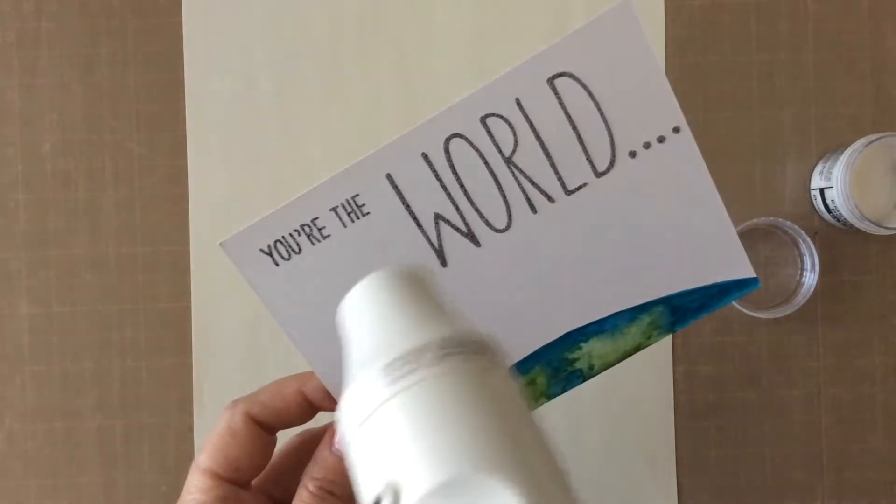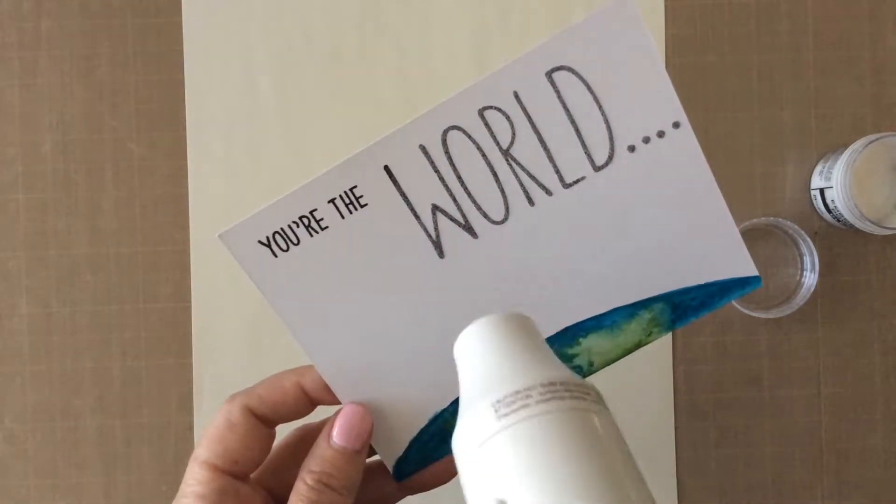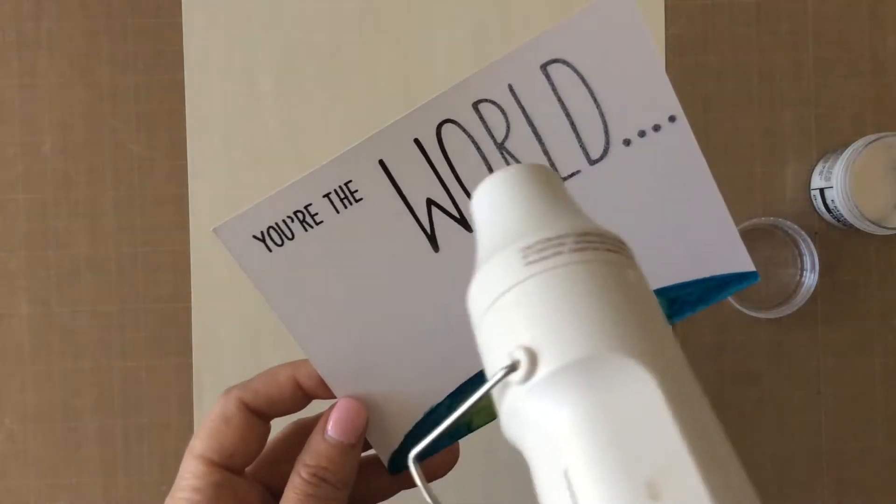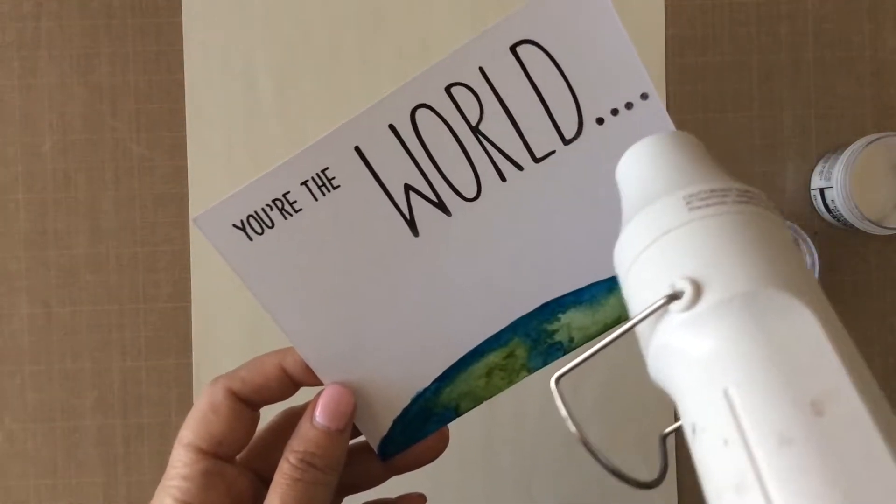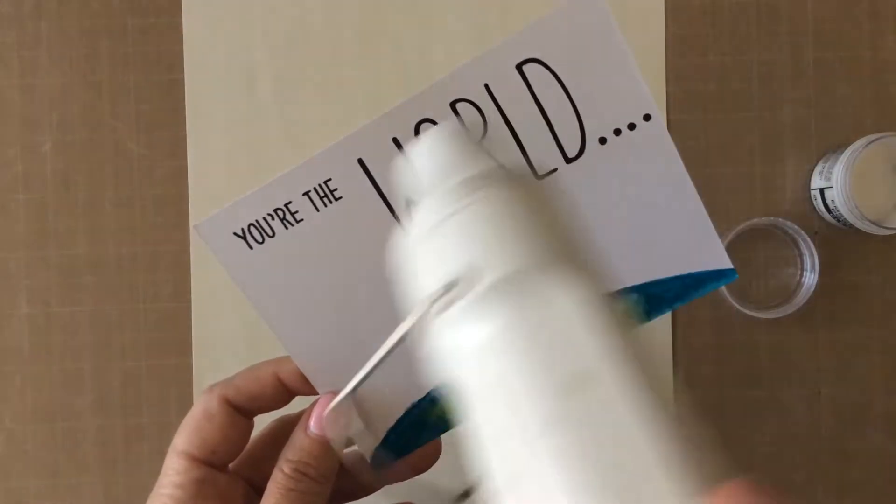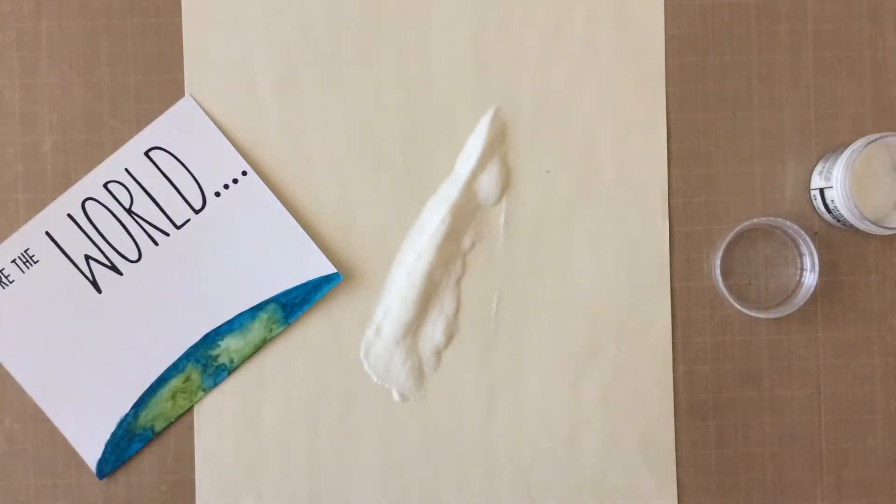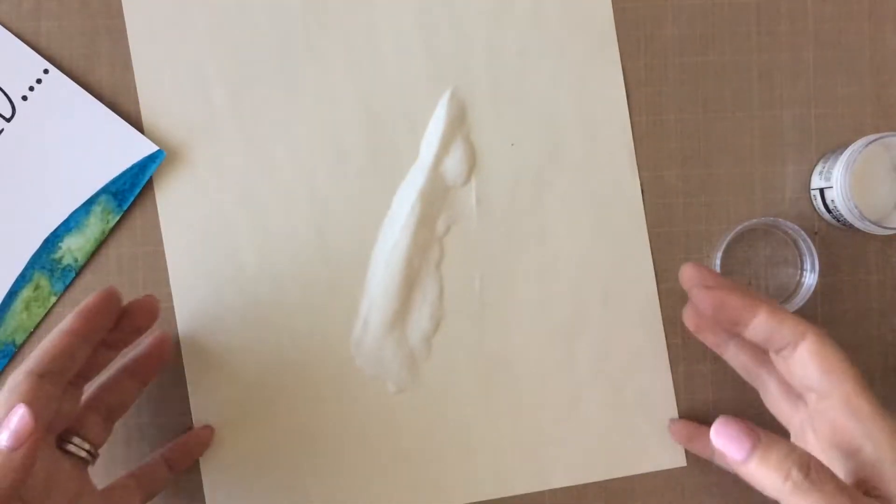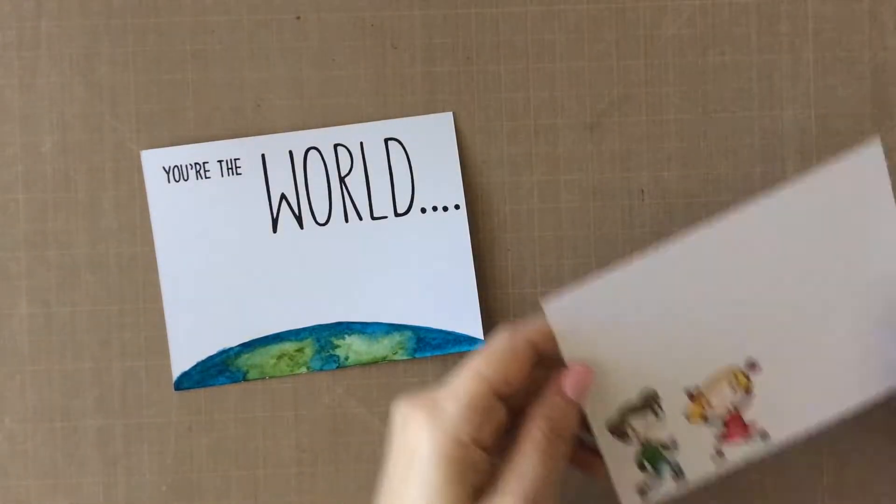And here you can see that I do use that clear embossing powder once again. I did not want to smear this ink. It is a pigment ink, so it takes a little longer to dry. So when you use the embossing powder, that just sets that ink so it won't smear. It's a great trick. Heat setting it here. And then I will go ahead and funnel that back into the jar, the remaining embossing powder there.